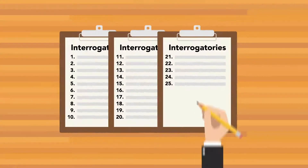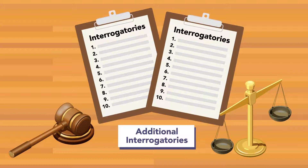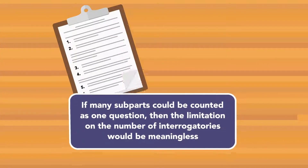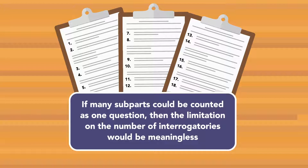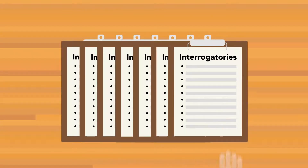Parties are limited to 25 interrogatories, including their discrete subparts, upon opposing counsel, though the court may allow additional interrogatories. This sounds like a simple limit, but it can be difficult to determine how many interrogatories are posted when a question has multiple subparts. If many subparts could be counted as one question, then the limitation on the number of interrogatories would be meaningless, and parties would effectively be able to post as many interrogatories as they want.